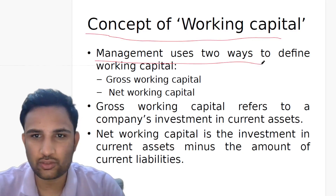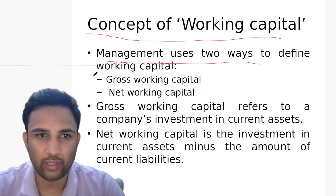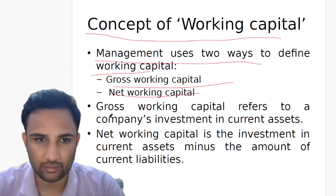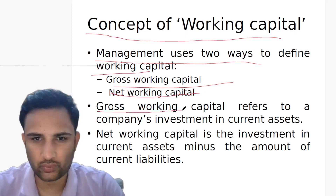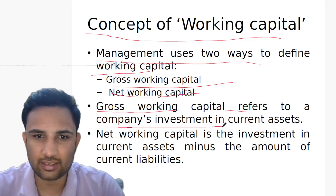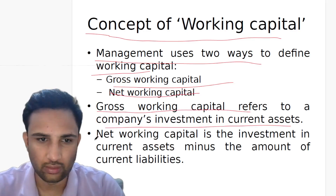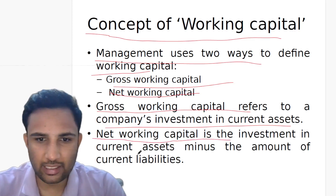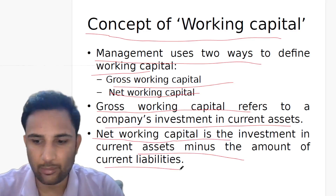Working capital management uses two ways to define working capital: gross working capital and net working capital. Gross working capital refers to a company's investment in current assets. Net working capital is the investment in current assets minus the amount of current liabilities.